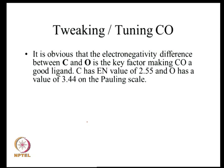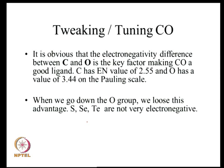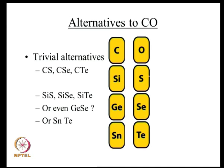Carbon has an electronegativity value of 2.55 and oxygen 3.44 — a big difference on the Pauling scale that is advantageous for carbon monoxide as a unique ligand. Going down group 16, sulphur has an electronegativity of 2.58, and selenium is almost identical to carbon at 2.55. So CS, CSe, and CTe lose this advantage, but they are still the best alternatives available.